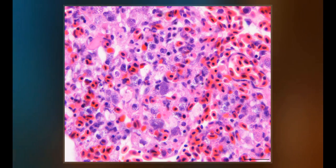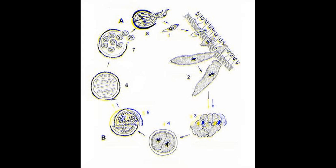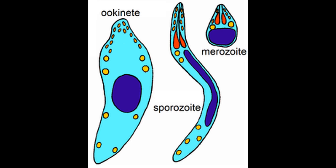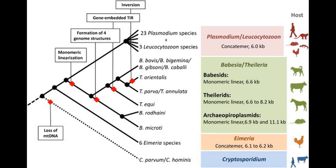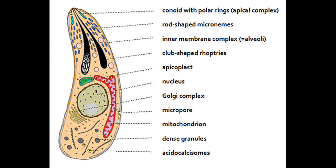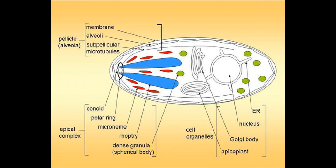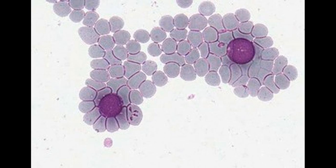Many coccidiamorphs have an intermediate host as well as a primary host, and the evolution of hosts proceeded in different ways and at different times in these groups. For some coccidiamorphs, the original host has become the intermediate host, whereas in others it has become the definitive host.